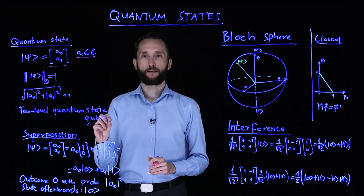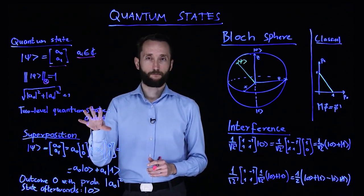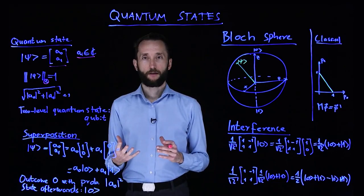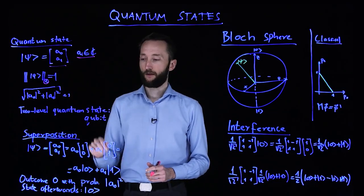This is the simplest possible quantum state. It has two possible outcomes. This is often referred to as a qubit. And the superposition is nothing but the expansion of this vector in a basis.